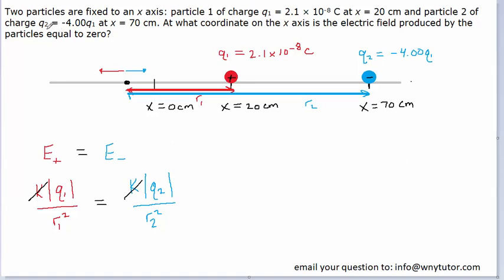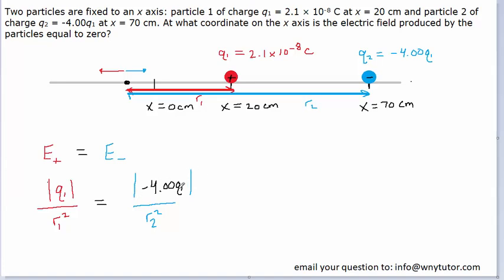We were told that q2 is equal to negative 4q1, so we plug in negative 4 times q1 for q2. Because of the absolute value around this, the numerator becomes simply positive 4q1. The value of q1 is already positive, so we don't need the absolute value on the left-hand side. We can simplify this equation even further: since q1 appears on both sides, we can divide it out — just remember to put a 1 as a placeholder in the numerator on the left side.